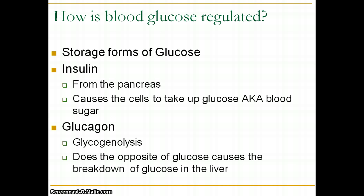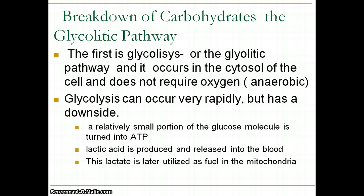Insulin is released from the pancreas and causes your cells to take up blood glucose. It activates carriers that transport glucose across into the cell, which is how blood sugar goes down. Glucagon has the opposite effect — it tells the liver to perform glycogenolysis, which means breaking down glycogen back into glucose and releasing it into the bloodstream.